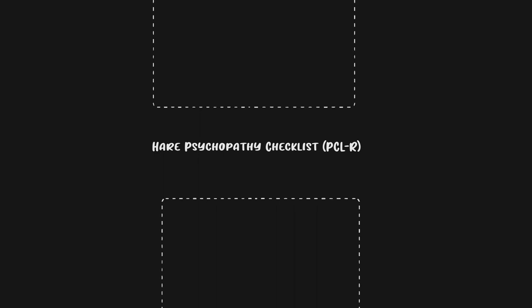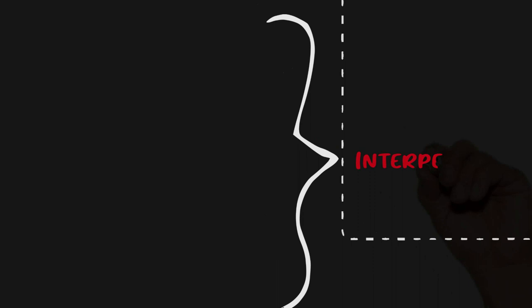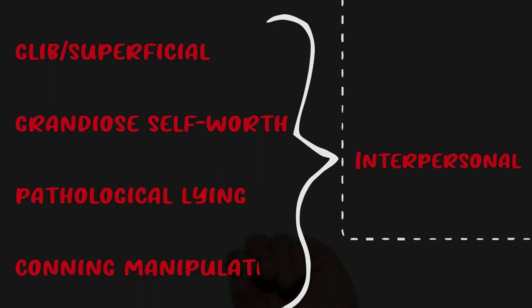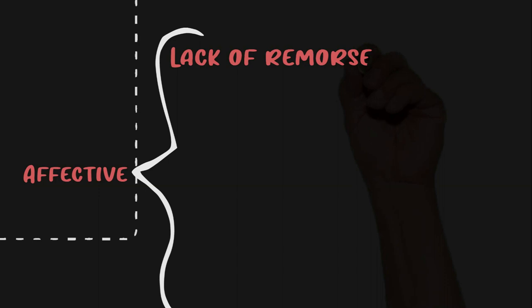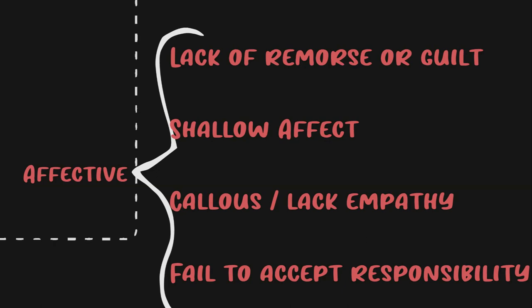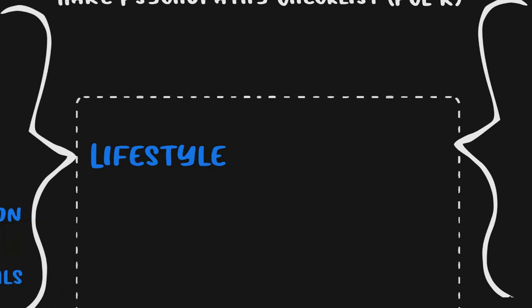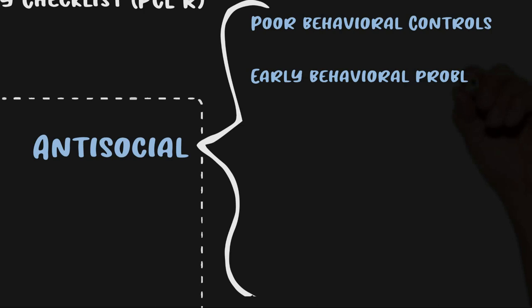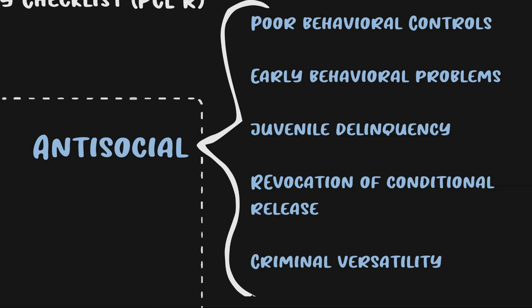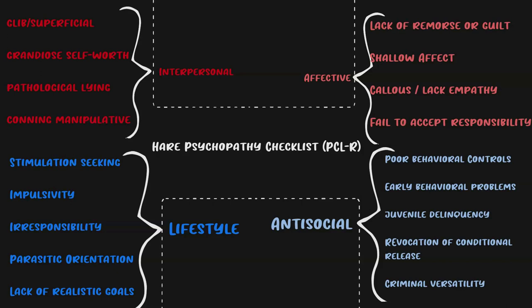The PCL-R breaks down into four factors. Factor one, interpersonal, includes: glib and superficial charm, grandiose self-worth, pathological lying, and conning and manipulative behavior. Factor two, affective, includes: lack of remorse or guilt, shallow affect, callousness, lack of empathy, and failure to accept responsibility. Factor three, lifestyle, includes: stimulation seeking, impulsivity, irresponsibility, parasitic behavior, and lack of realistic goals. Factor four, antisocial, includes: poor behavioral control, early behavioral problems, juvenile delinquency, revocation of conditional release, and criminal versatility.